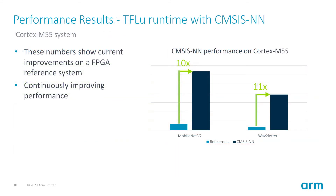Let's look at the kind of performance improvement we can get from an optimized library. Using the latest vector-capable processor, Cortex-M55, you can get around 10x performance improvement on the popular MobileNet V2 and Wave-to-Letter models.